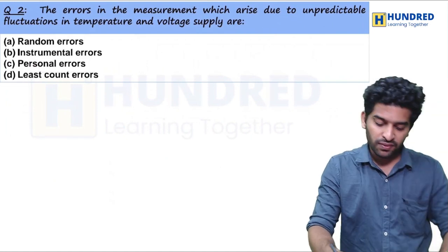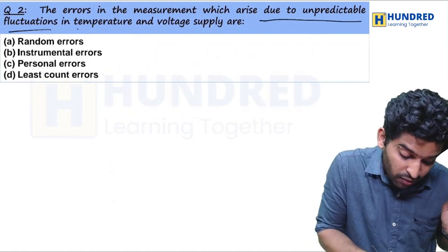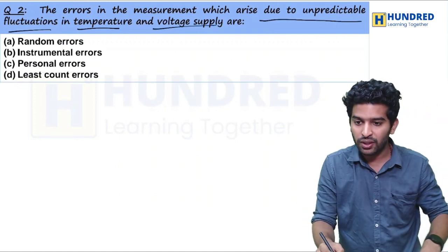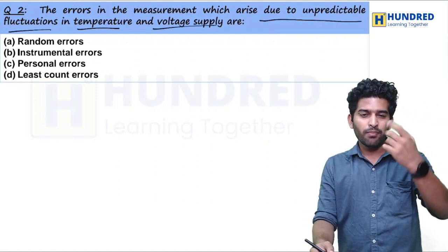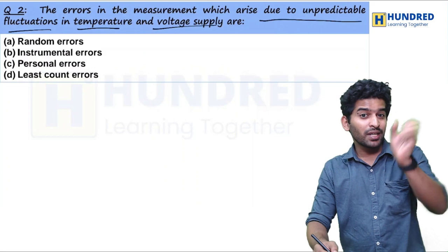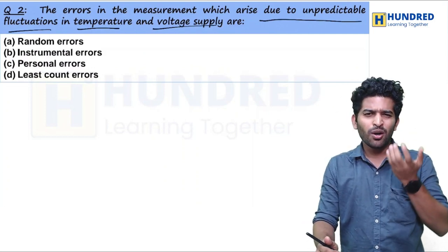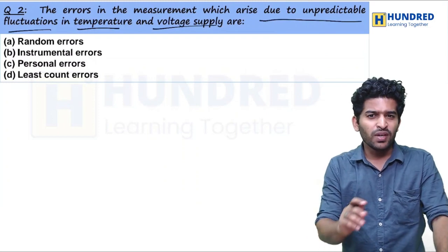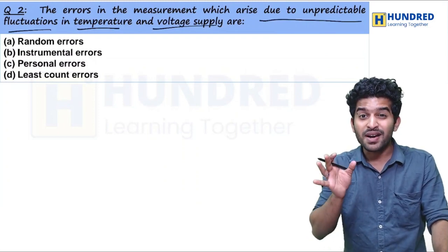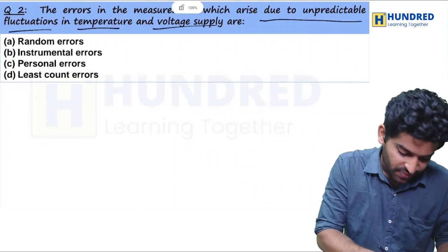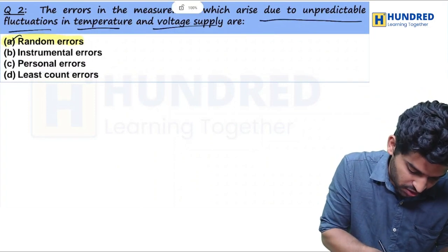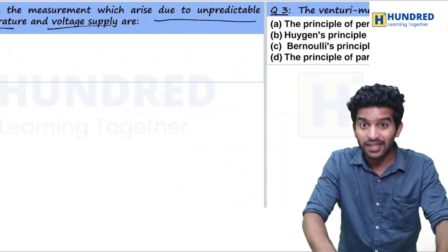The errors in measurement which arise due to unpredictable fluctuations in temperature and voltage supply. Errors in measurement due to unpredictable fluctuations, we categorize it as a random error. Direct, straightforward questions. This is the NEET 2023.